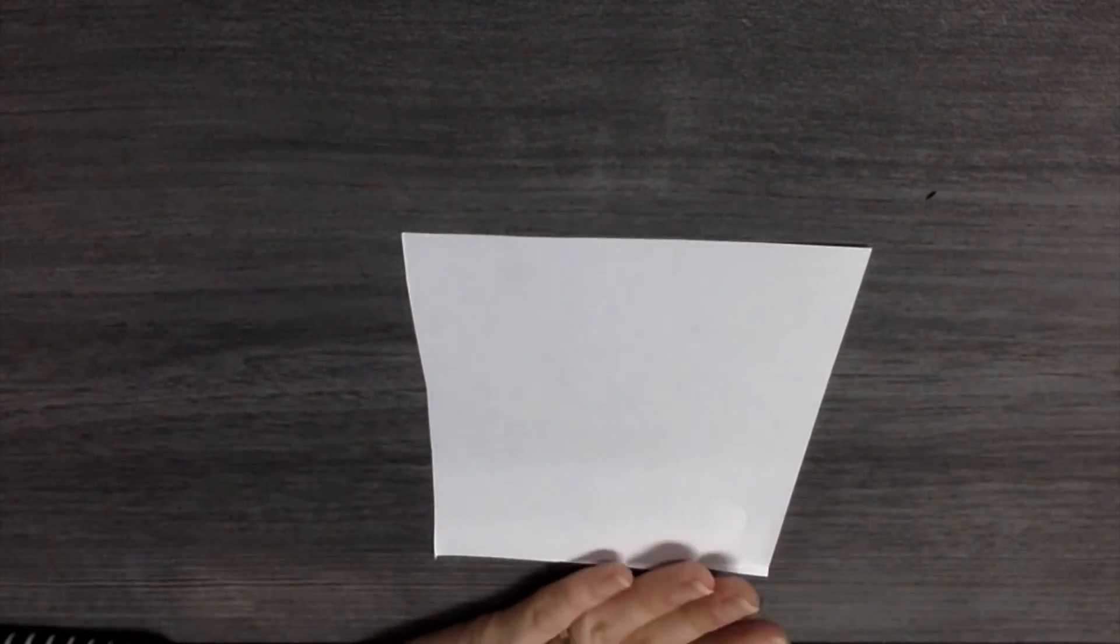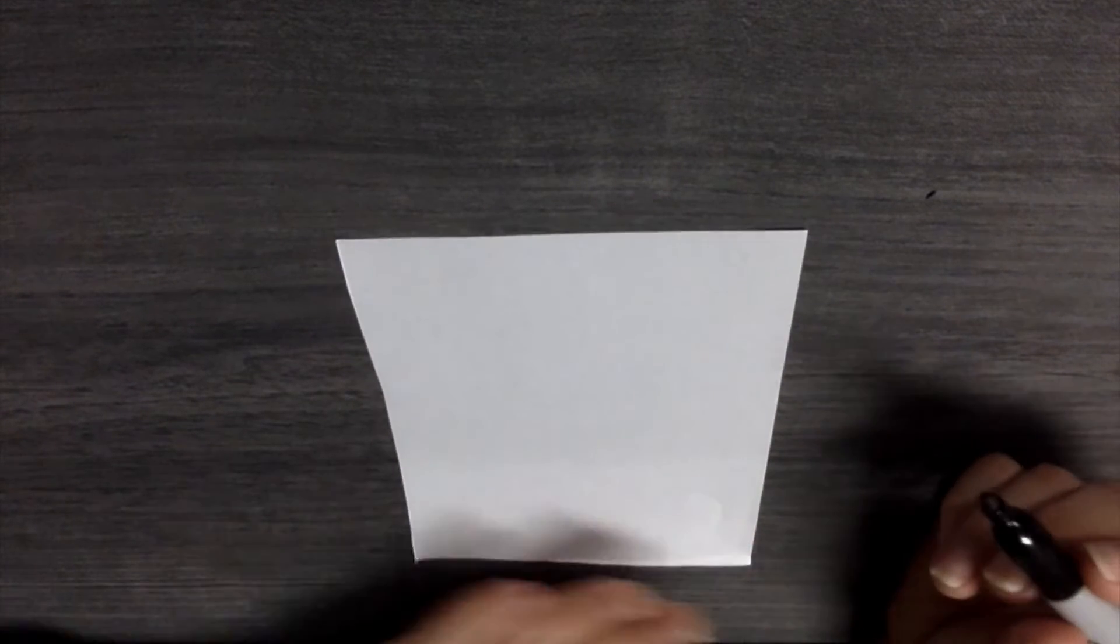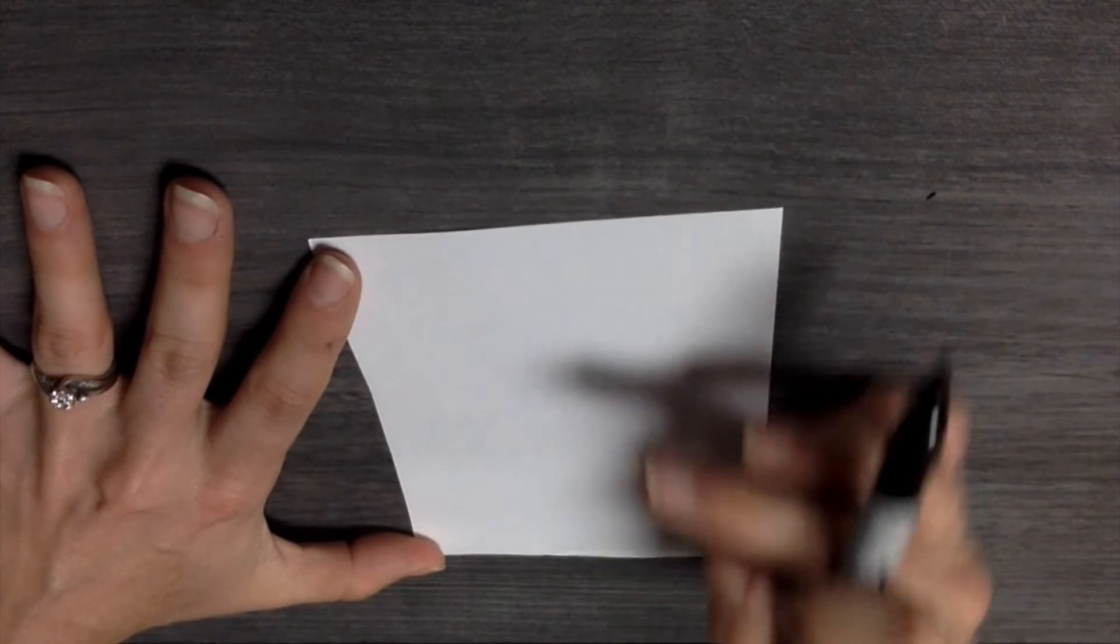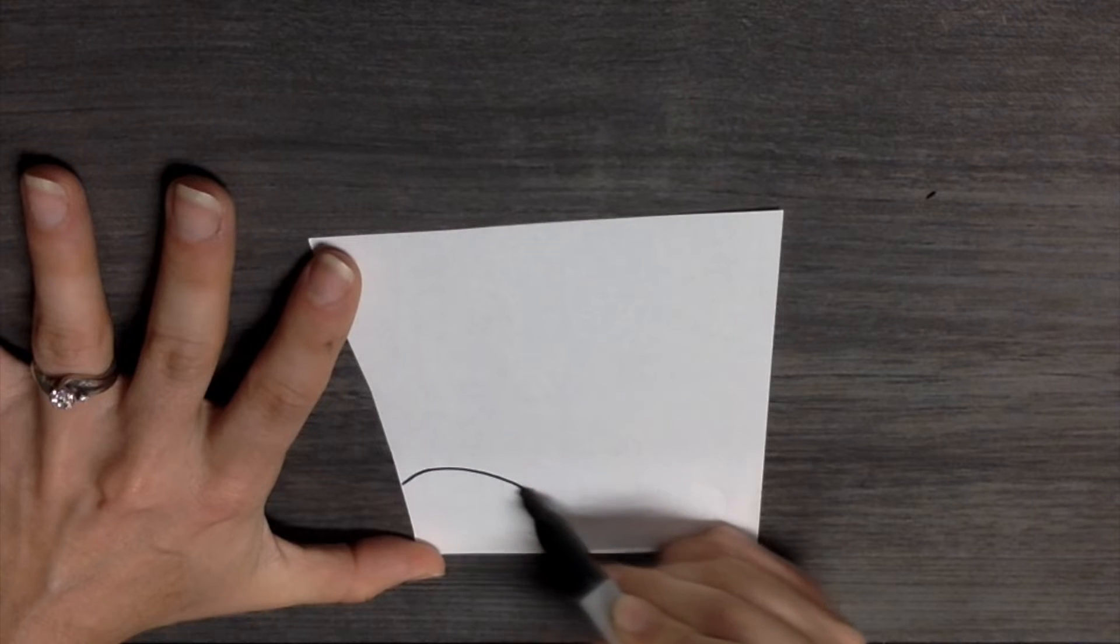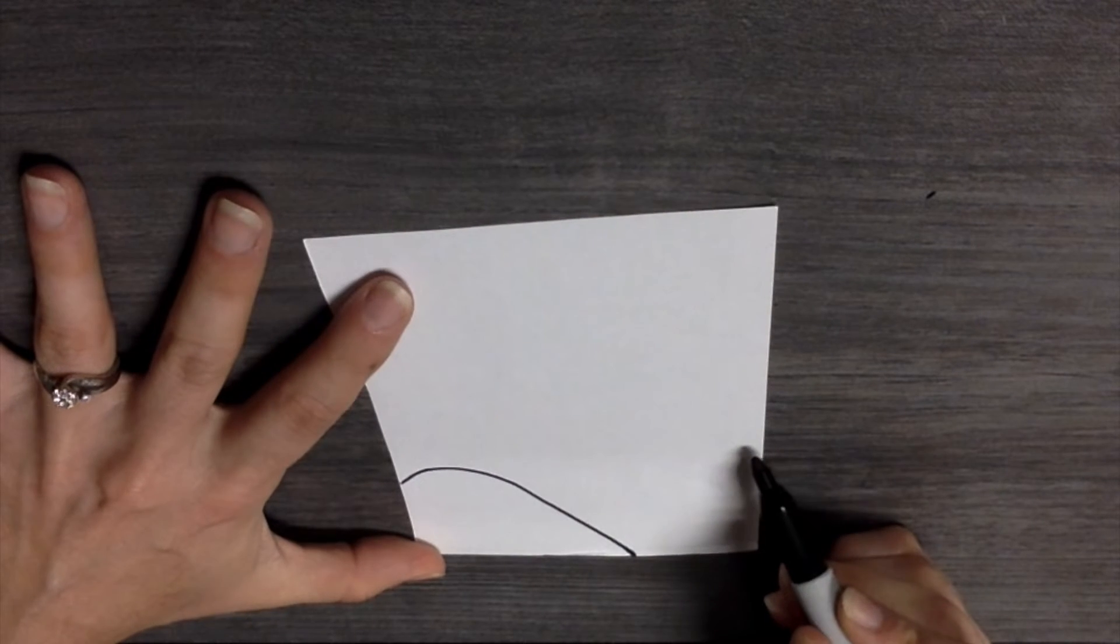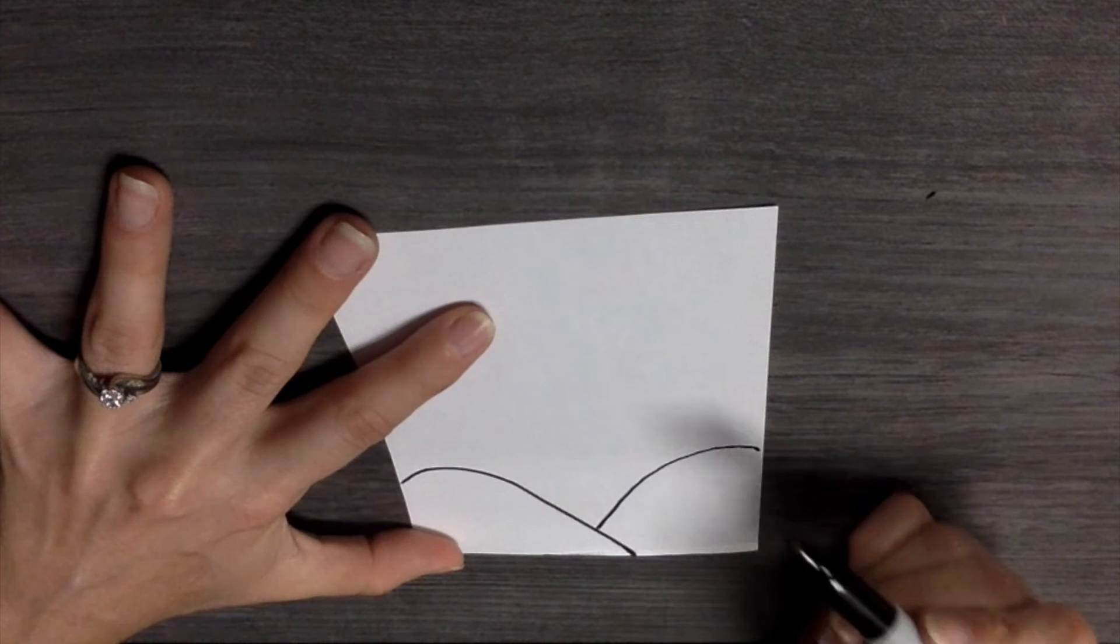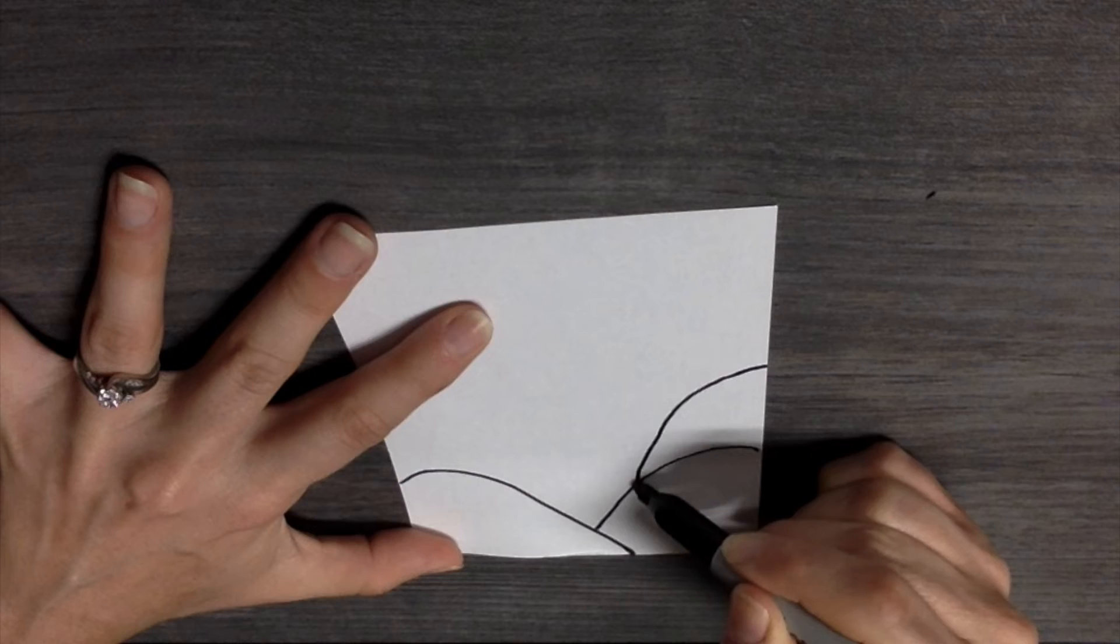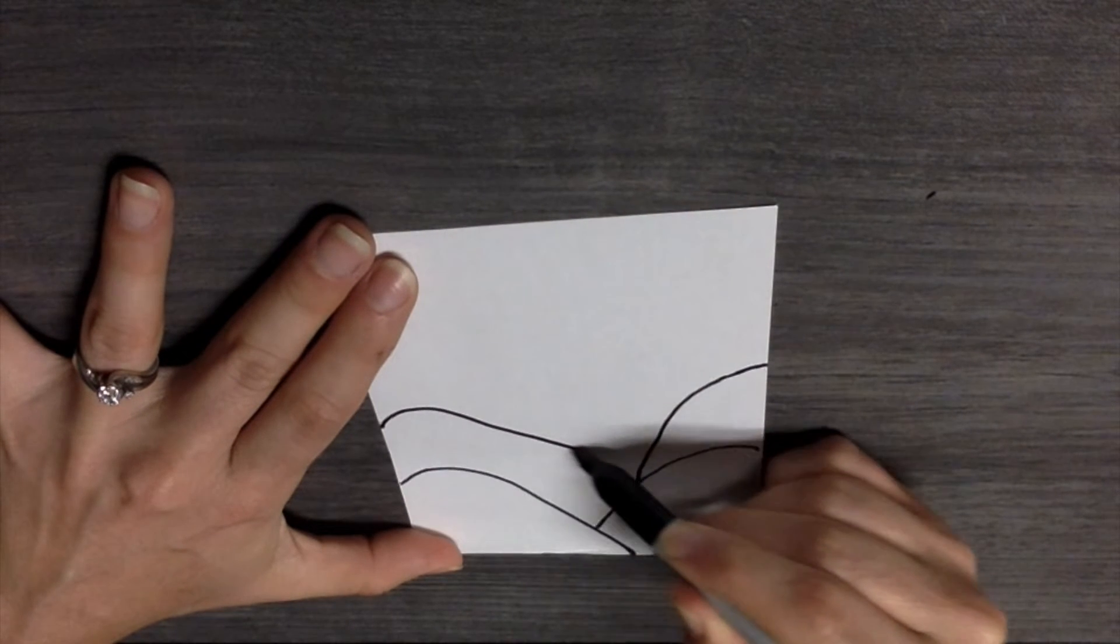Now we are going to make a mountain landscape. Start at the bottom and make our way up the page. We are going to start with that first hill going up and down. On this side we are going to go up and down. Do another one here. Up and down. Up and down.